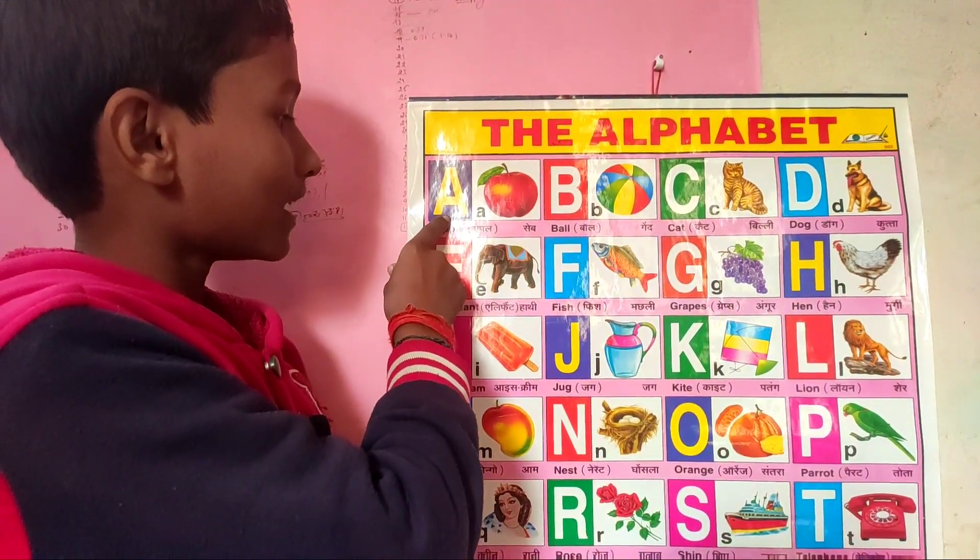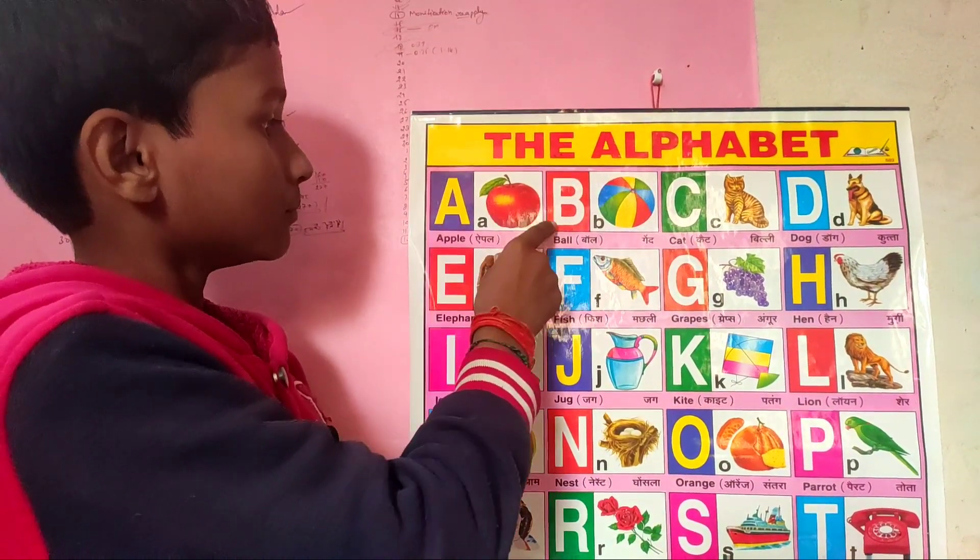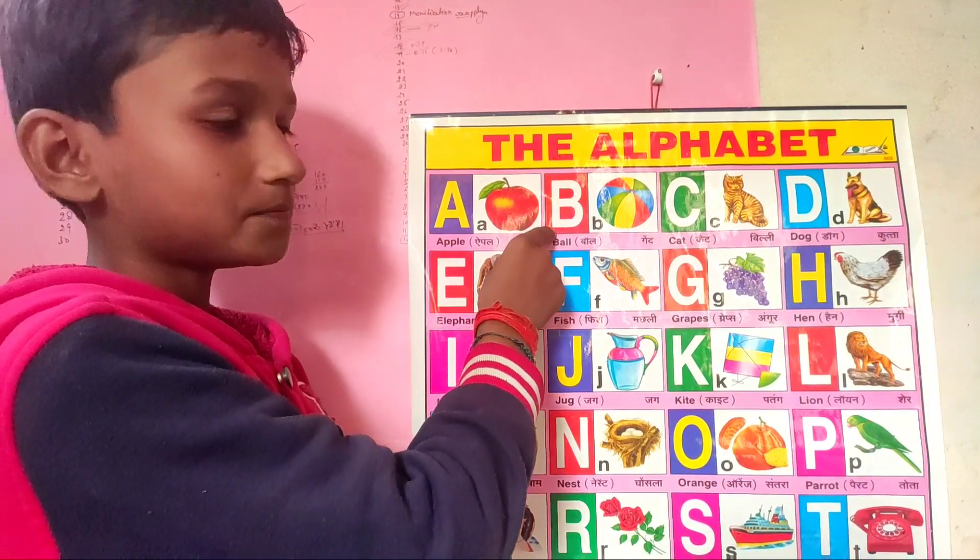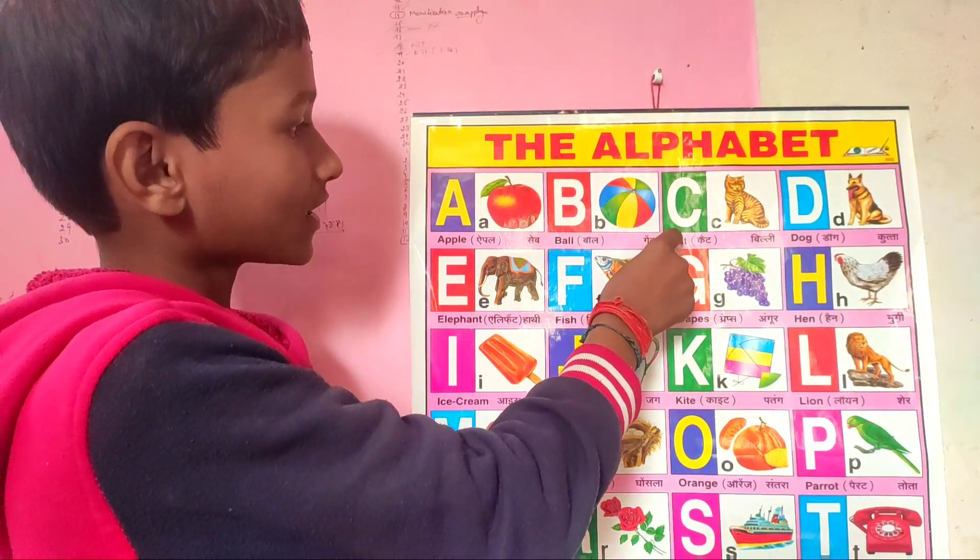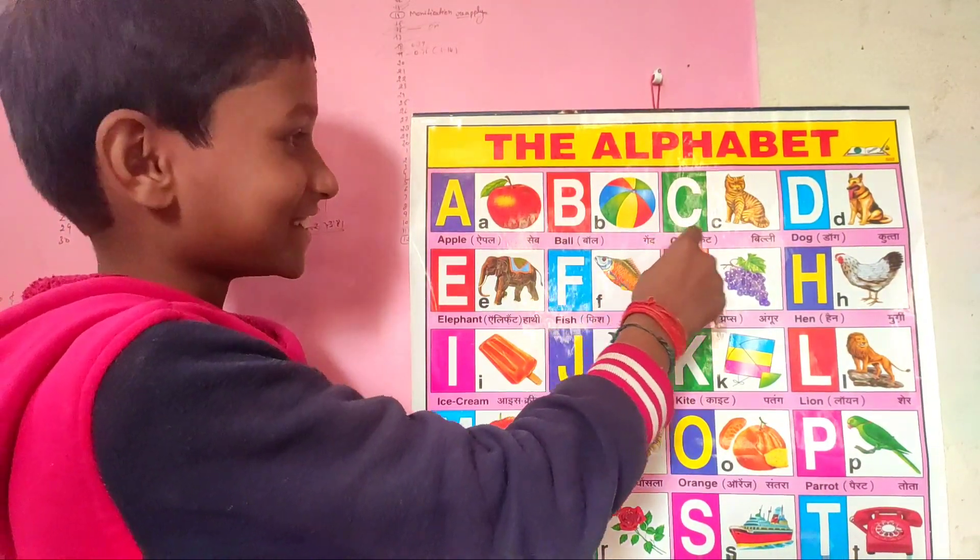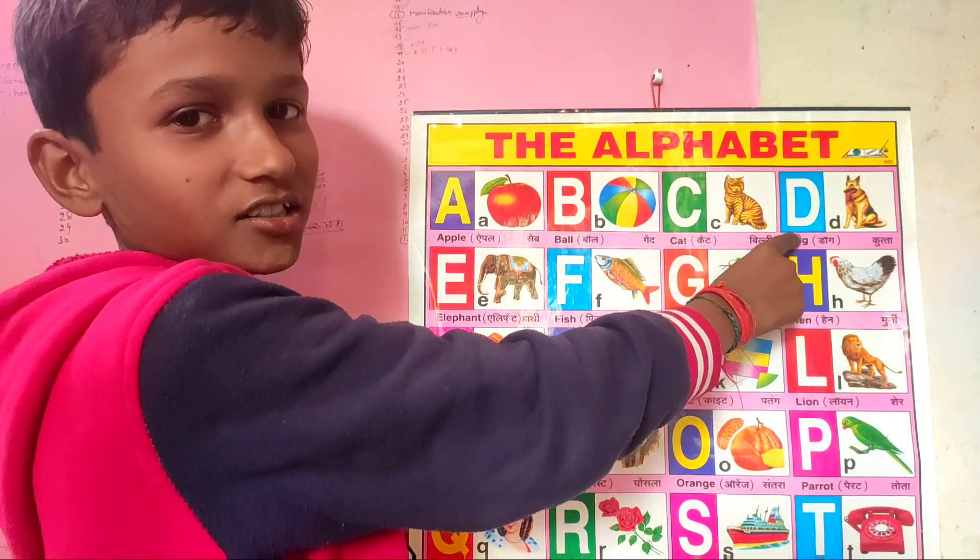A for apple, B for ball, C for cat, D for dog.